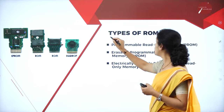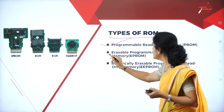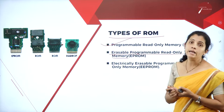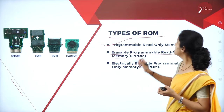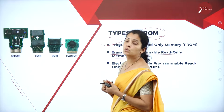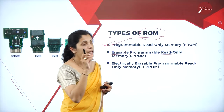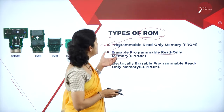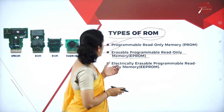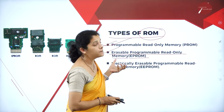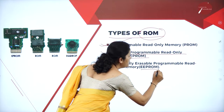Moving further, let's look at the different types of ROM. Read only memory is classified into three types: programmable read only memory (PROM), erasable programmable read only memory (EPROM), and electrically erasable programmable read only memory (EEPROM).